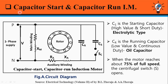Firstly, we will take a look at the Construction of Capacitor Start and Capacitor Run Induction Motor. This motor is also known as Two-Value Capacitor Run Motor. Figure-A shows the circuit diagram for Capacitor Start, Capacitor Run Induction Motor. Both the main winding and the auxiliary winding remain permanently in the circuit during starting and the running condition. The auxiliary winding is located 90 degrees electrically apart from the main winding.